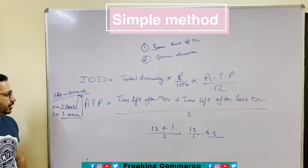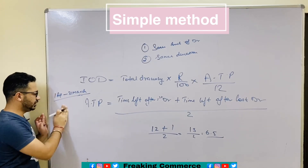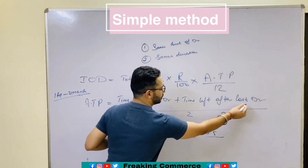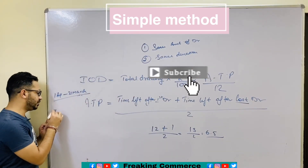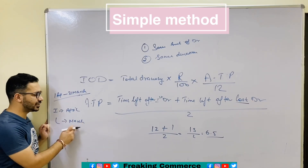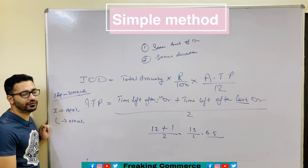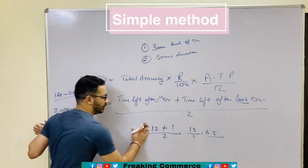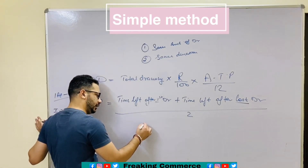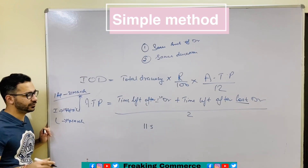Let's take one more example. If Mr. A withdrew 2,000 in the middle of every month — middle means on the 15th of every month — we need only two months: the first one and the last one. First month is April and last month is March. He is going to withdraw on the 15th of every month, which means 15th April and 15th March. Time left after first drawing: from 15th April to 31st March is 11 months 15 days. Since 1 month equals 1 and 15 days equals 0.5, that is 11.5 months.